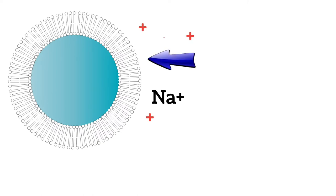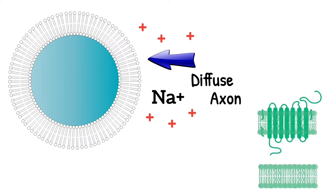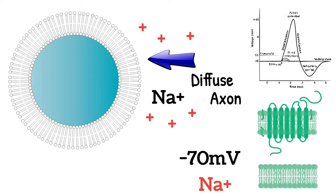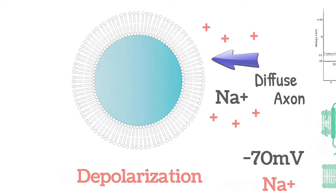This allows tremendous numbers of positively charged sodium ions to diffuse to the interior of the axon. The normal polarized state of minus 70 millivolts is immediately neutralized by the inflowing positively charged sodium ions, with the potential rising rapidly in the positive direction, a process called depolarization.